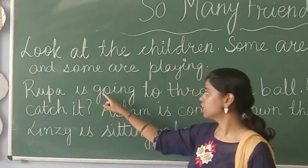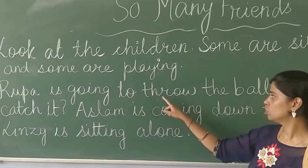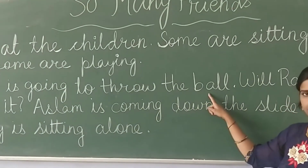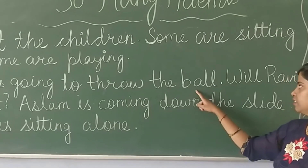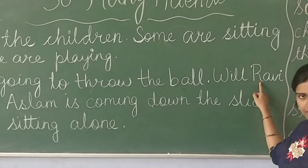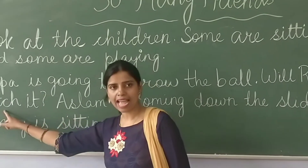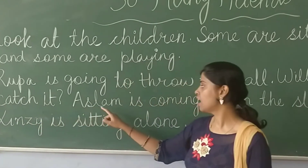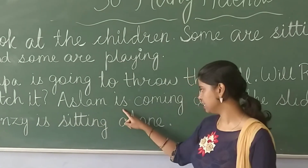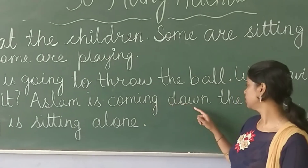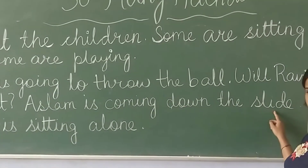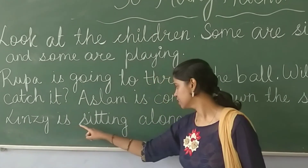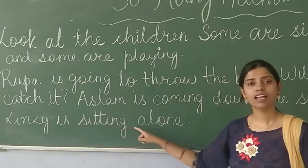Rupa is going to throw the ball. Will Ravi catch it? A slum is coming down the slide. Why? Lindsay is sitting alone.